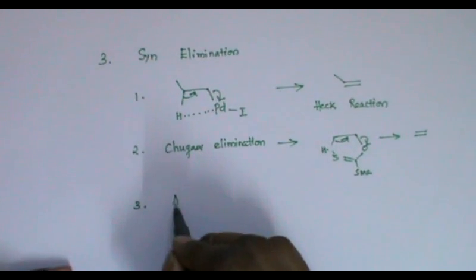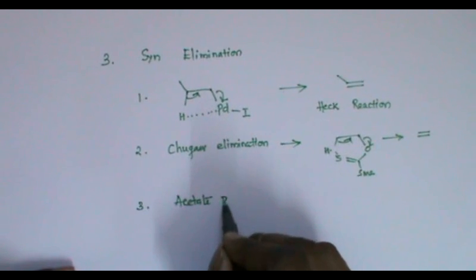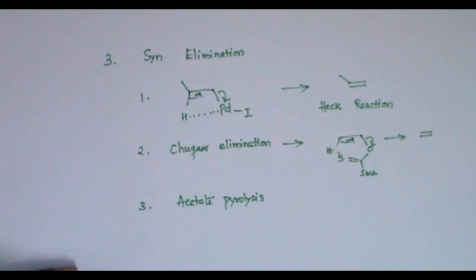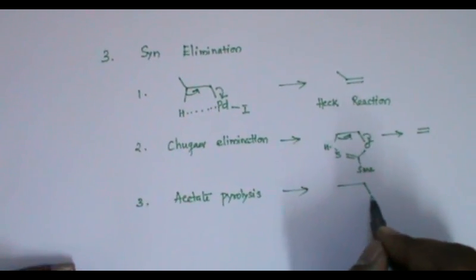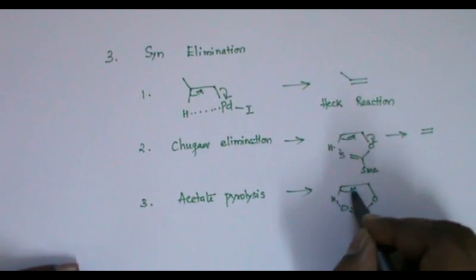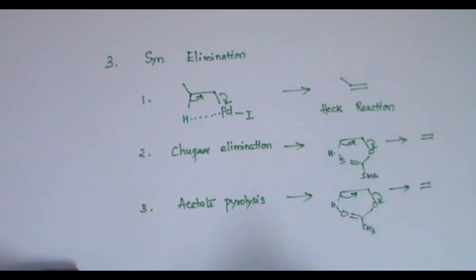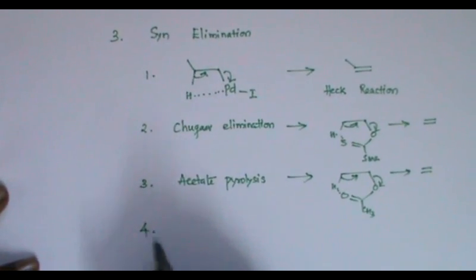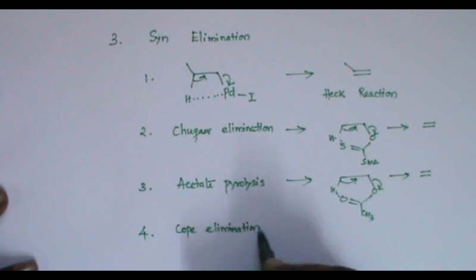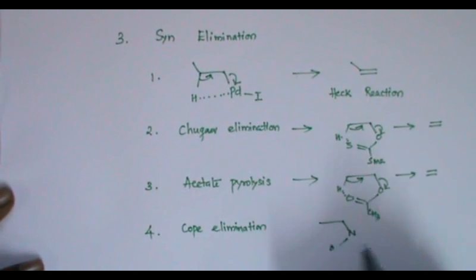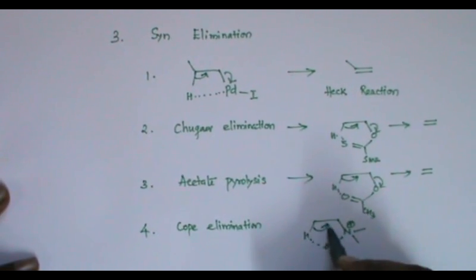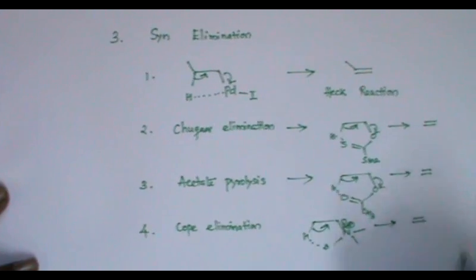The third syn elimination is acetate pyrolysis — again, the acetate and hydrogen must be cis to each other. The fourth is the Cope elimination, where the N-oxide and hydrogen must be cis to each other — only then will we get the olefin product.